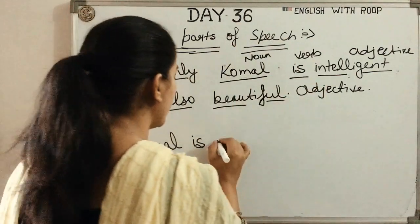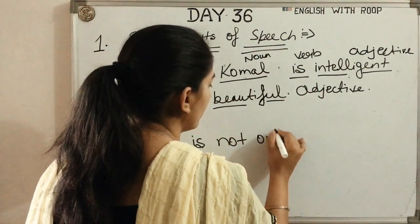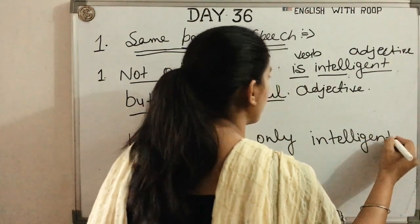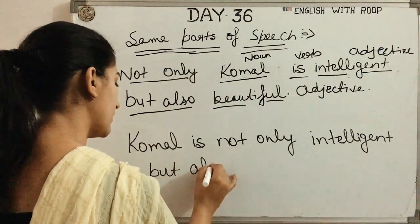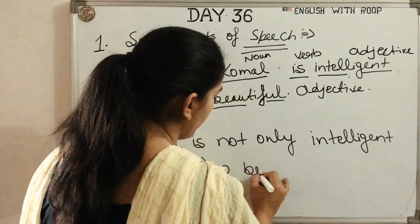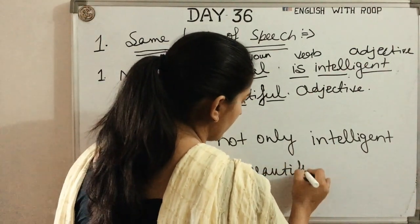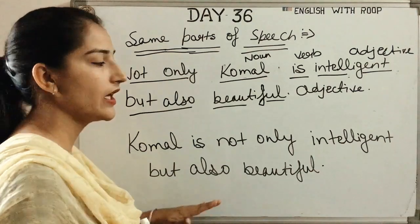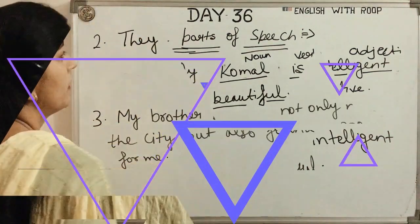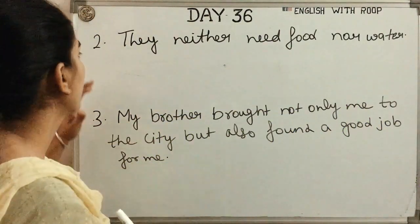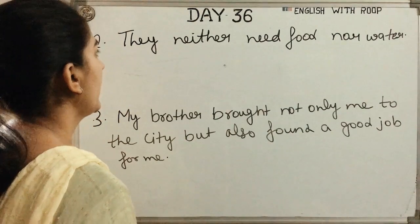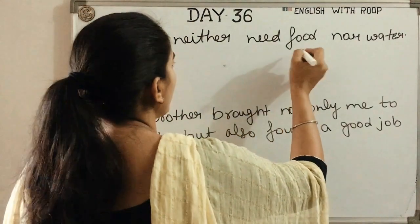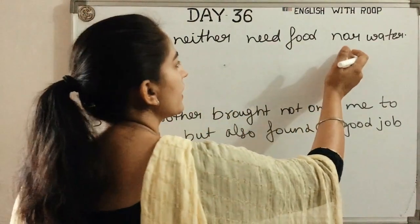There are three rules we need to know for using either/or, neither/nor, and not only...but also. The first rule is same parts of speech — both words joined should be the same part of speech: both nouns, both verbs, or both adjectives. The second rule is correct helping verb. You need to know where the helping verb goes, especially when there are two subjects.